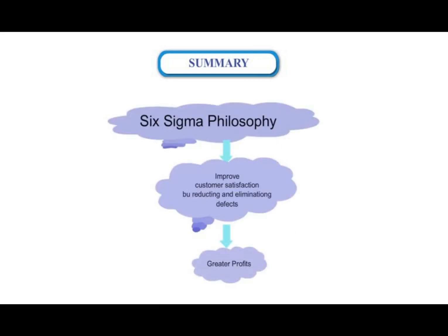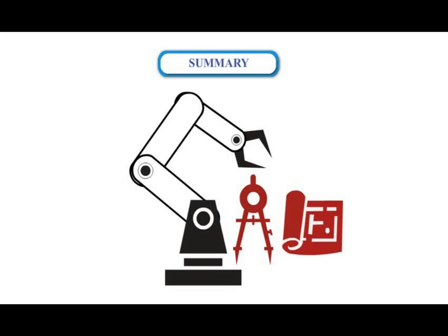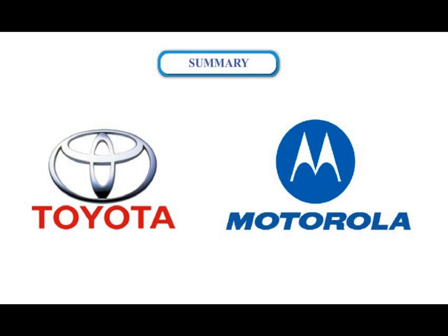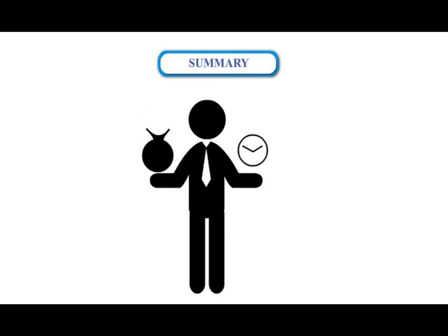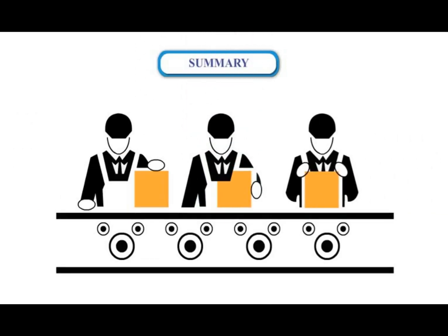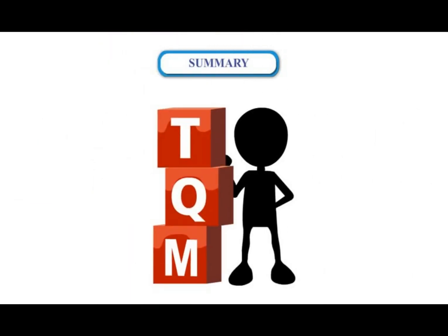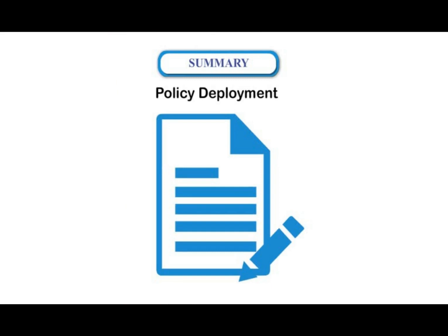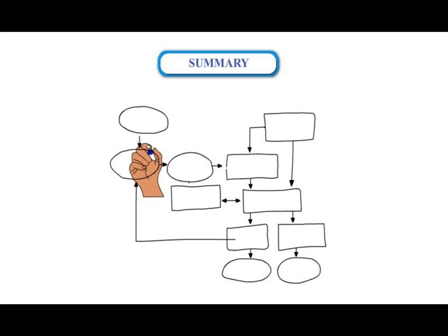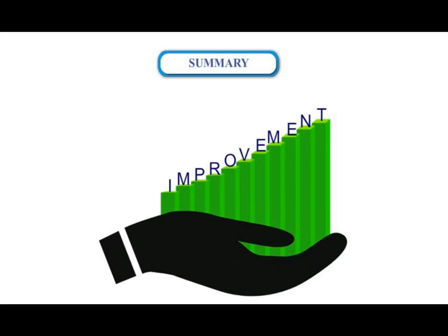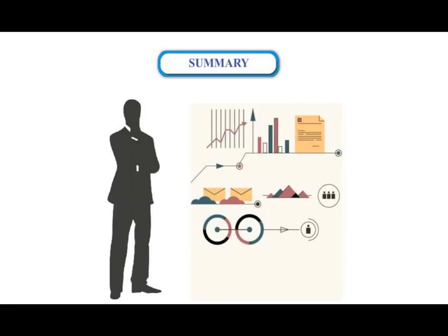Six Sigma philosophies are related to statistical process control, stochastic control relating to probability, and engineering process control. The Toyota and Motorola management system allows its adopters to produce twice as much in half the time, at half the cost, with half the problems, and with a fraction of the inventory. The Toyota management system is a combination of three innovations: just-in-time production, total quality management, and policy deployment. Motorola ensures that process metrics and structured methodology are applied to improvement opportunities directly linked to organizational strategy.